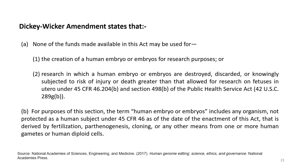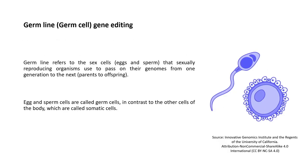For purposes of this section, the term 'human embryo or embryos' includes any organism not protected as a human subject under 45 CFR 46 as of the date of the enactment of this act, that is derived by fertilization, parthenogenesis, cloning or any other means from one or more human gametes or human diploid cells. Germline refers to the sex cells — eggs and sperm — that sexually reproducing organisms use to pass on their genomes from one generation to the next, known as vertical inheritance. Egg and sperm cells are called germ cells, in contrast to the other cells of the body, which are called somatic cells.